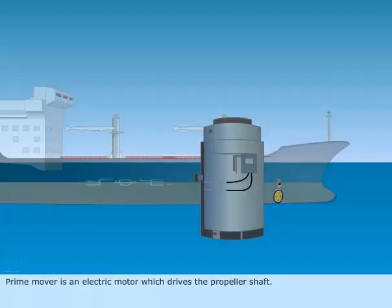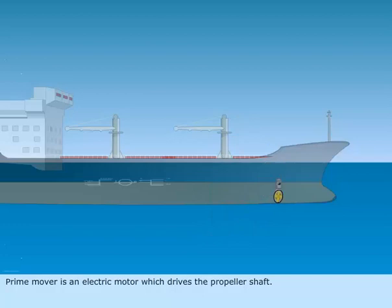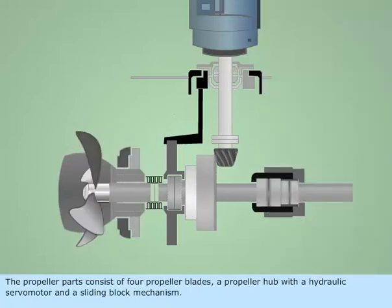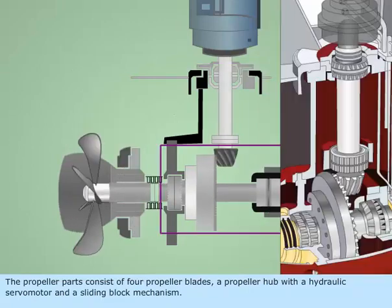The prime mover is an electric motor which drives the propeller shaft. The propeller parts consist of four propeller blades, a propeller hub with a hydraulic servo motor, and a sliding block mechanism.